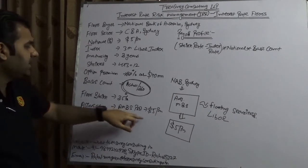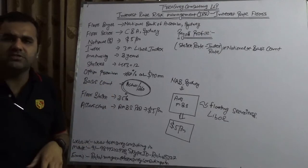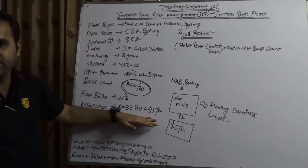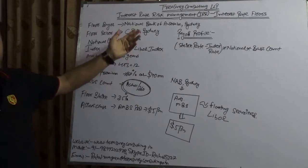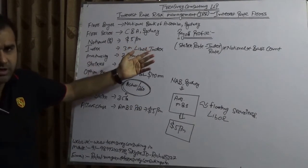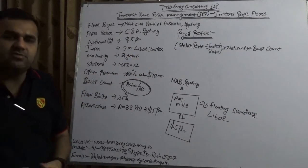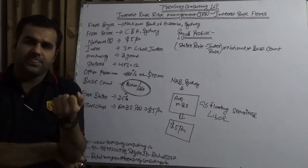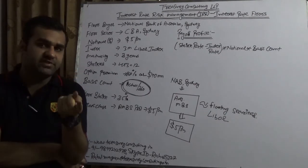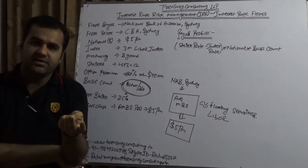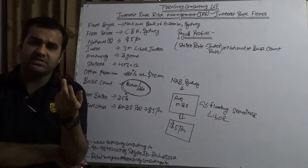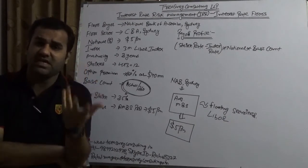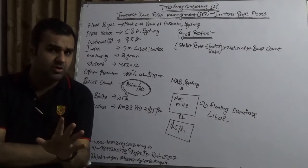For illustration purposes, we are keeping the notional the same, though practically NAB could have done this for $50 billion. To put things in perspective: the daily foreign exchange market size is $5 trillion, interest rate derivatives are $100 trillion, and LIBOR-based securities are $1,750 trillion — which is 350 times larger. That is not a small amount, believe me.